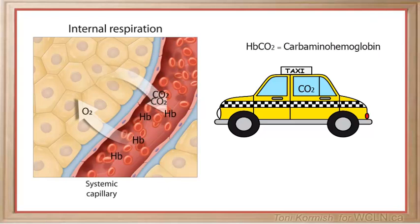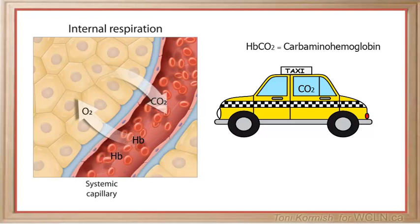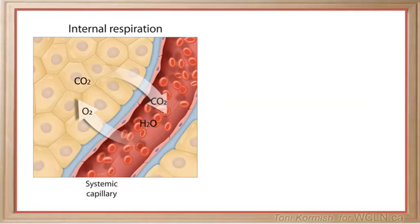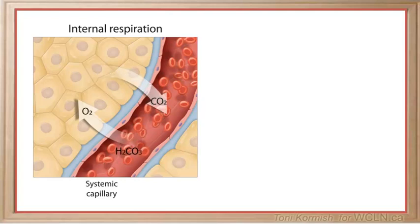Hemoglobin binds to the carbon dioxide that is diffusing out of the cell into the bloodstream to form carbaminohemoglobin. Some of the carbon dioxide that diffuses out of the cells of the body will react with water to temporarily form carbonic acid.